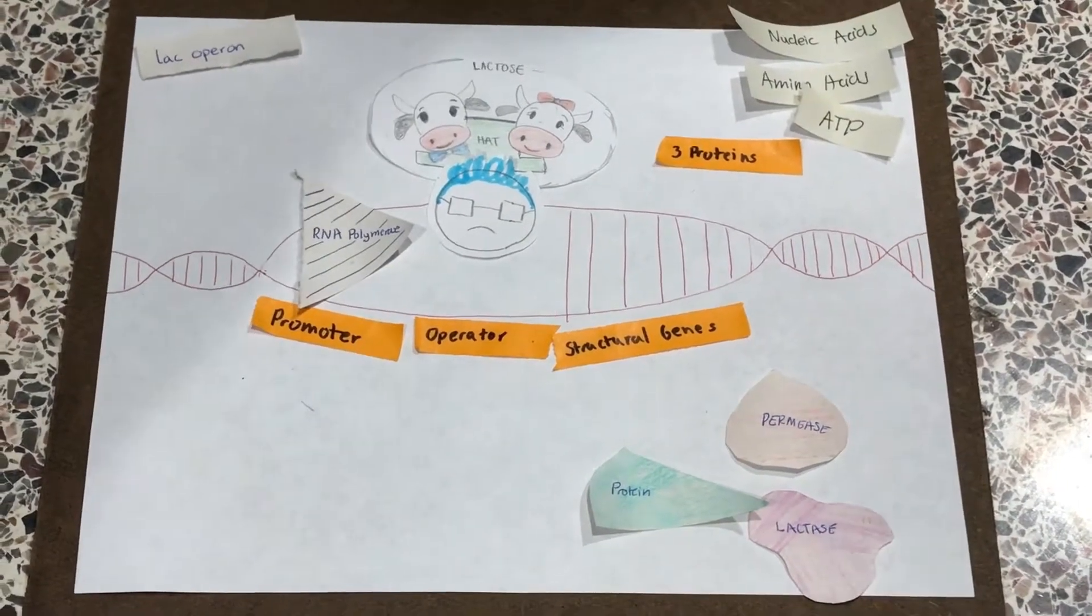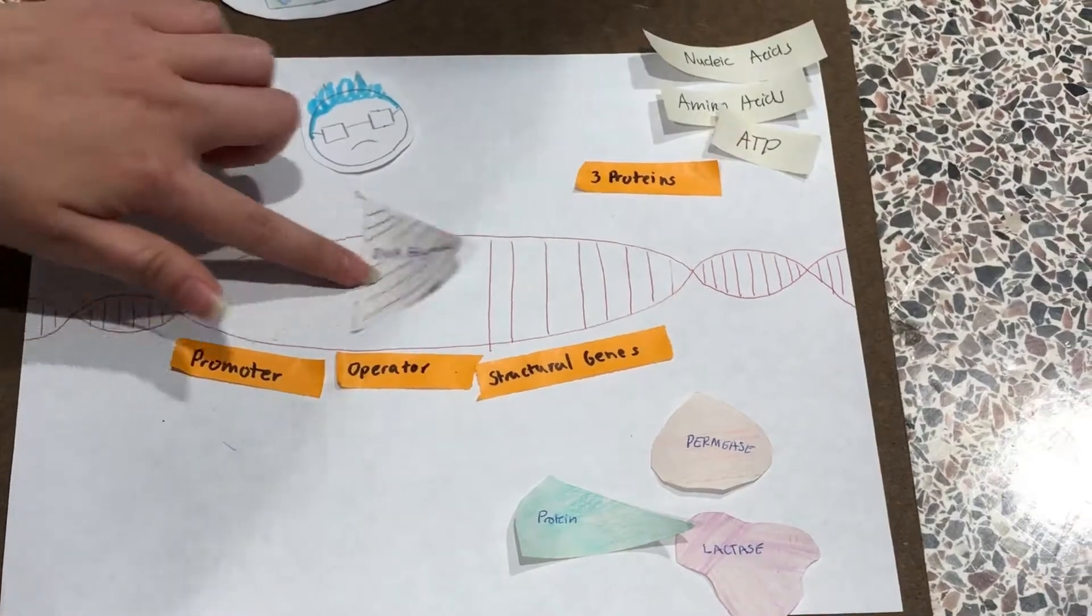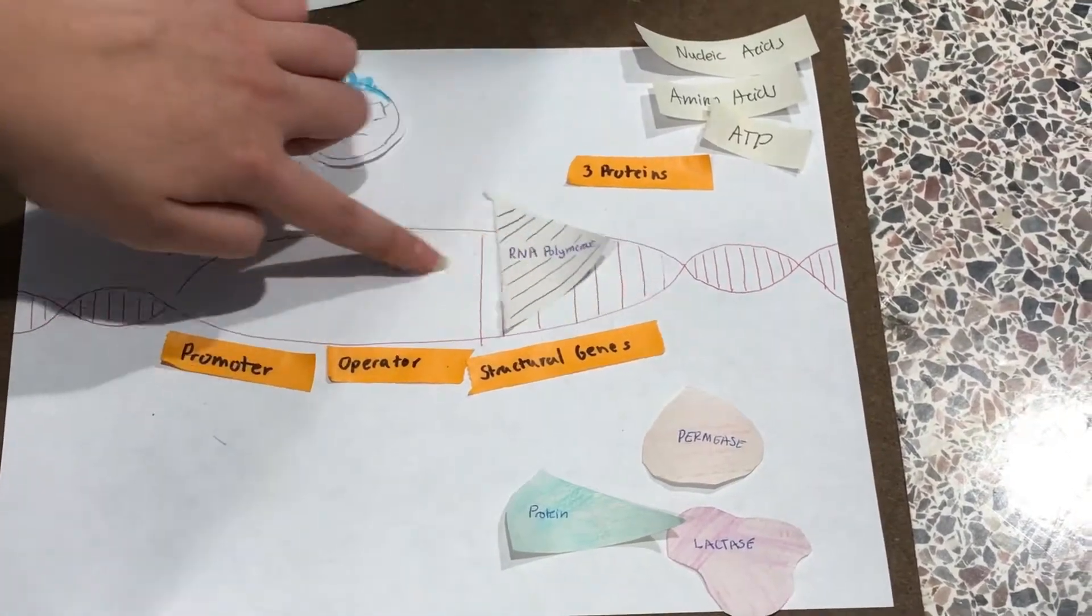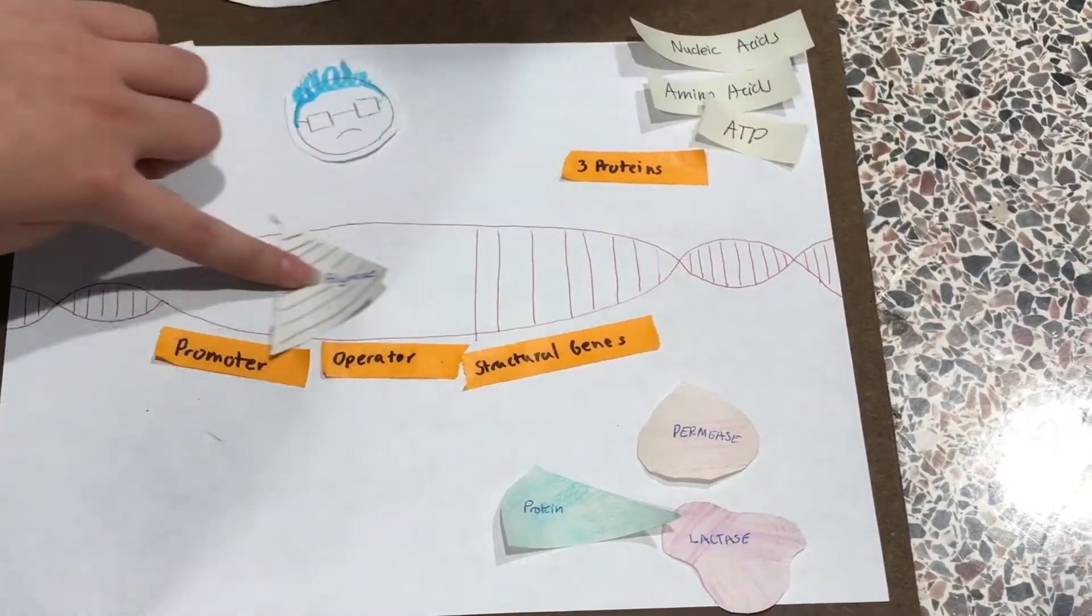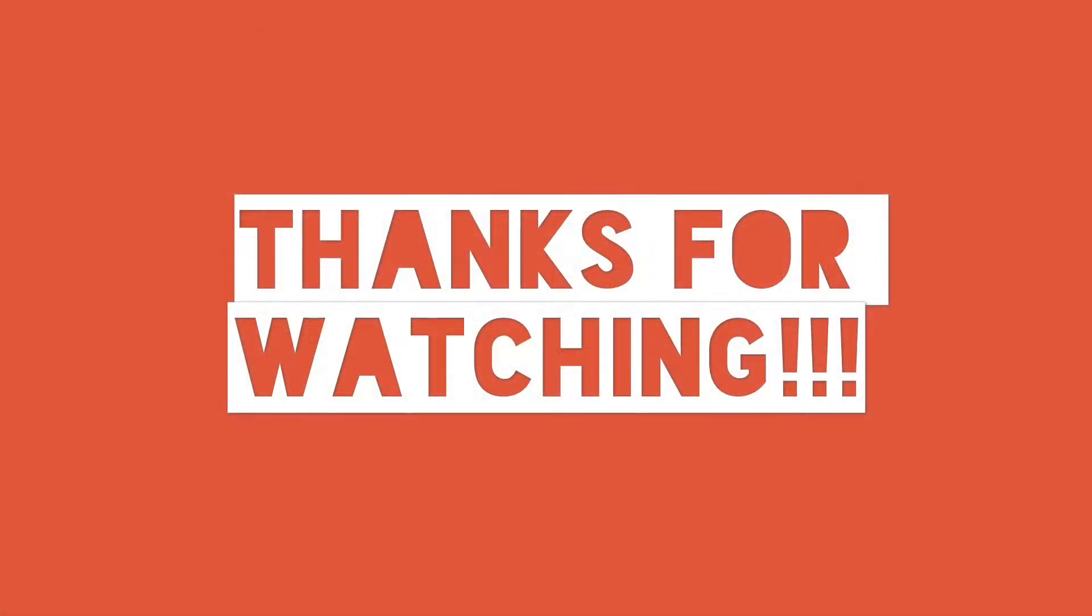Another mutation would be if the active repressor can't bind to the operator, which means RNA polymerase will constantly be active, constantly creating these proteins and wasting ingredients and materials of the cell.